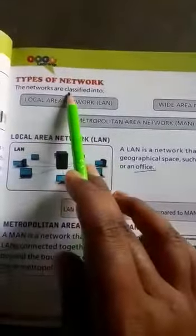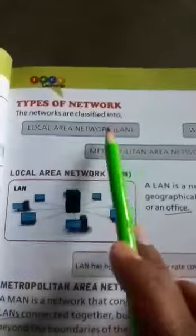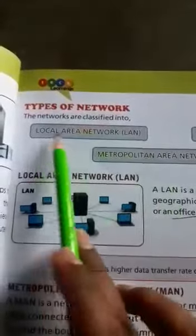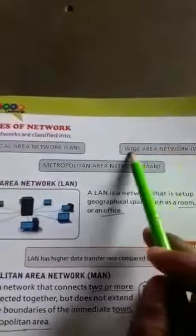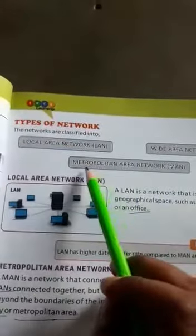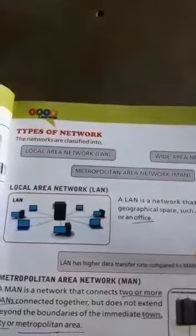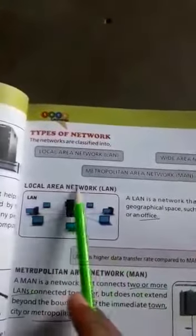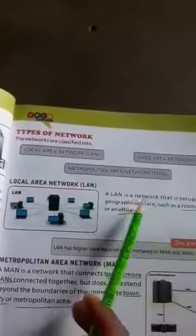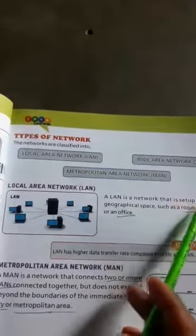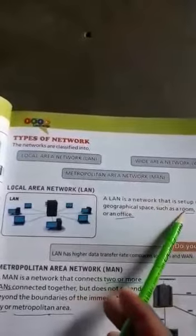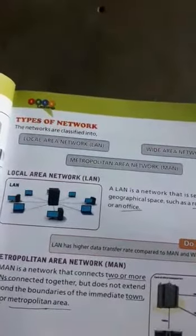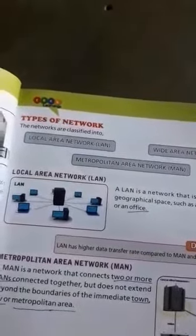The networks are classified into Local Area Network (LAN), Wide Area Network (WAN), and Metropolitan Area Network (MAN). First, Local Area Network (LAN) is a network that is set up in a small geographical space, such as a room, a building, or an office.